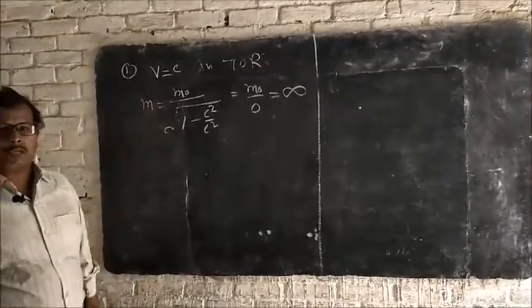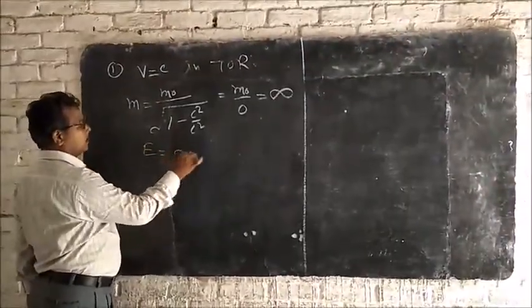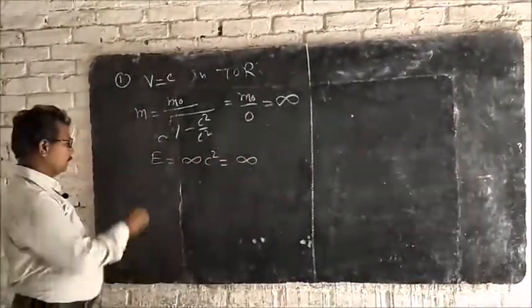But infinite mass is not possible, so putting m equal to infinite C square, that is infinite, it is not possible.